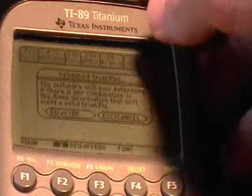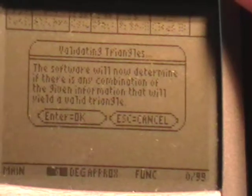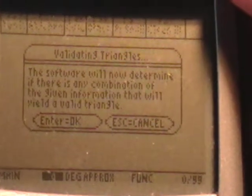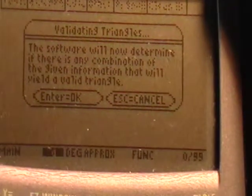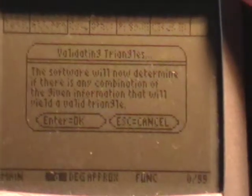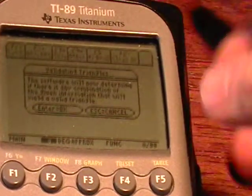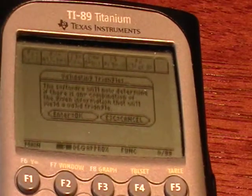And if you're wondering, this says the software will now determine if there is any combination of the given information that will yield a valid triangle. But we can just skip past that every time, if you already know what it says.